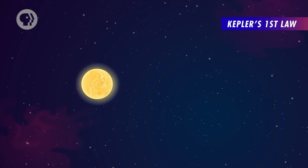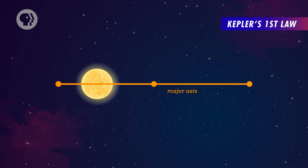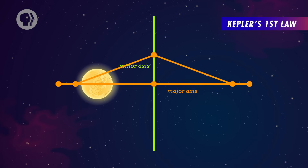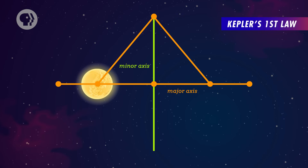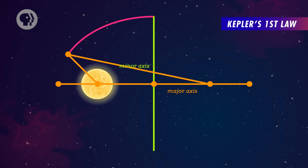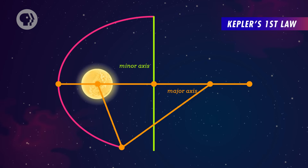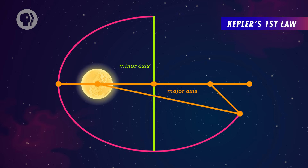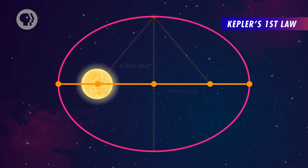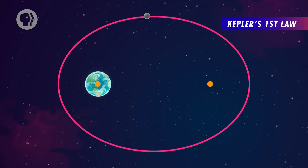According to Kepler, the orbits of the planets were ellipses, as opposed to circles, with the Sun at one focus of the ellipse — one of the two central points used to describe how the ellipse curves. That's Kepler's first law, and it actually applies to any elliptical orbit, not just those of planets. Our Moon's orbit around the Earth is also an ellipse, and Earth is at one focus of that ellipse.